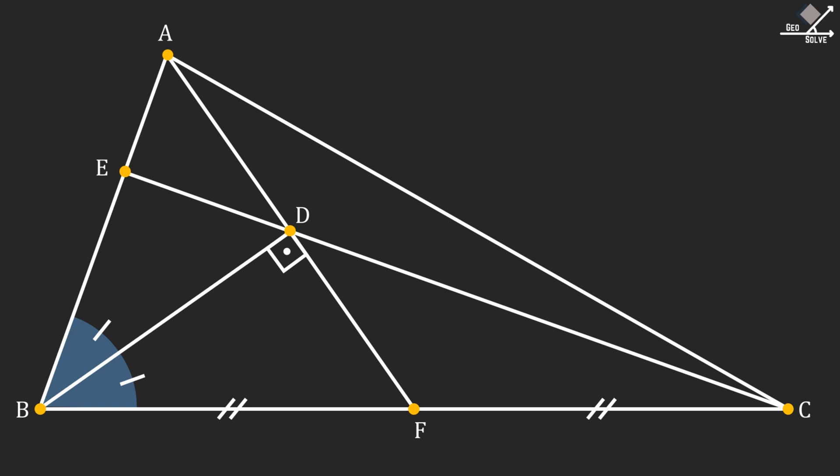Line segment EC passes through point D. And we are asked to find the ratio of line segment BC to line segment AE.